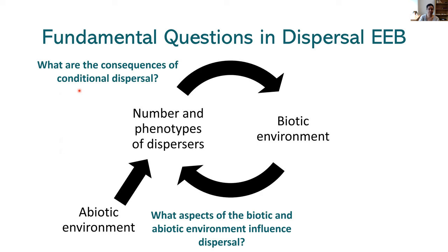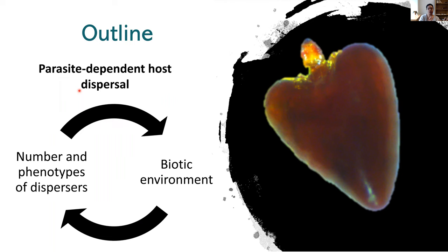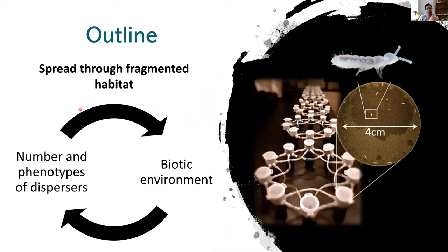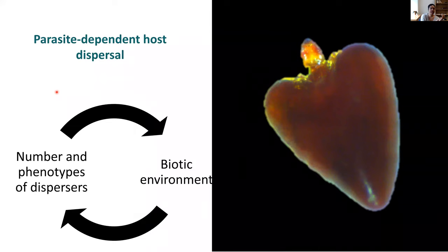I'm going to tell you about two different themes that both relate to this feedback between the biotic environment and dispersal. First, I'll tell you about a couple of projects on the theme of parasite-dependent host dispersal. Then I'll talk about individual variation in dispersal and how it impacts population spread through a fragmented habitat. So first: how do parasites influence host dispersal, and how does this feed back to the biotic environment?